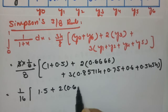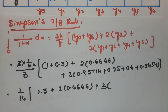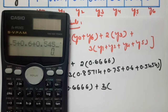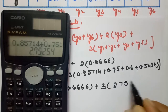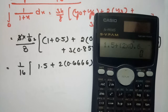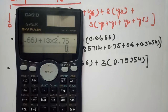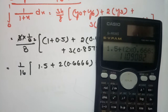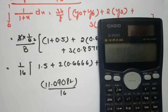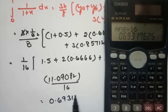So we have 1.5 + 2 × 0.6666 + 3 × 2.75254. Adding up: 1.5 + 1.3332 + 8.25762 = 11.09082. Dividing by 16: 11.09082 / 16 = 0.693176. So the value according to Simpson's 3/8 rule is 0.693176.